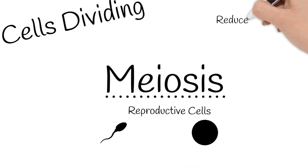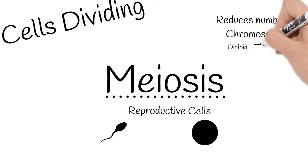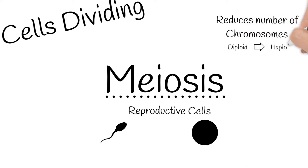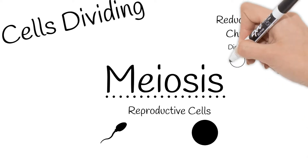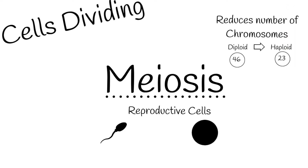Meiosis reduces the number of chromosomes in a cell. It goes from what is called a diploid to a haploid. As mentioned in previous videos, humans have 46 chromosomes in our body cells — they are diploid. But through meiosis, sperm and egg cells have 23 chromosomes, haploid.